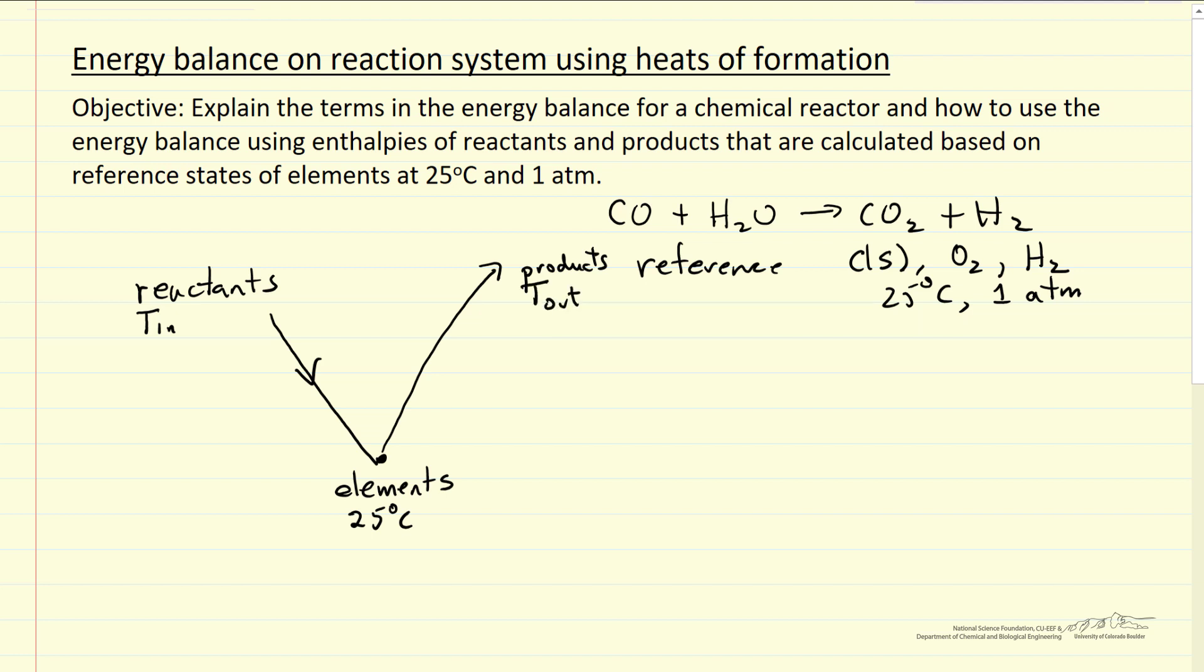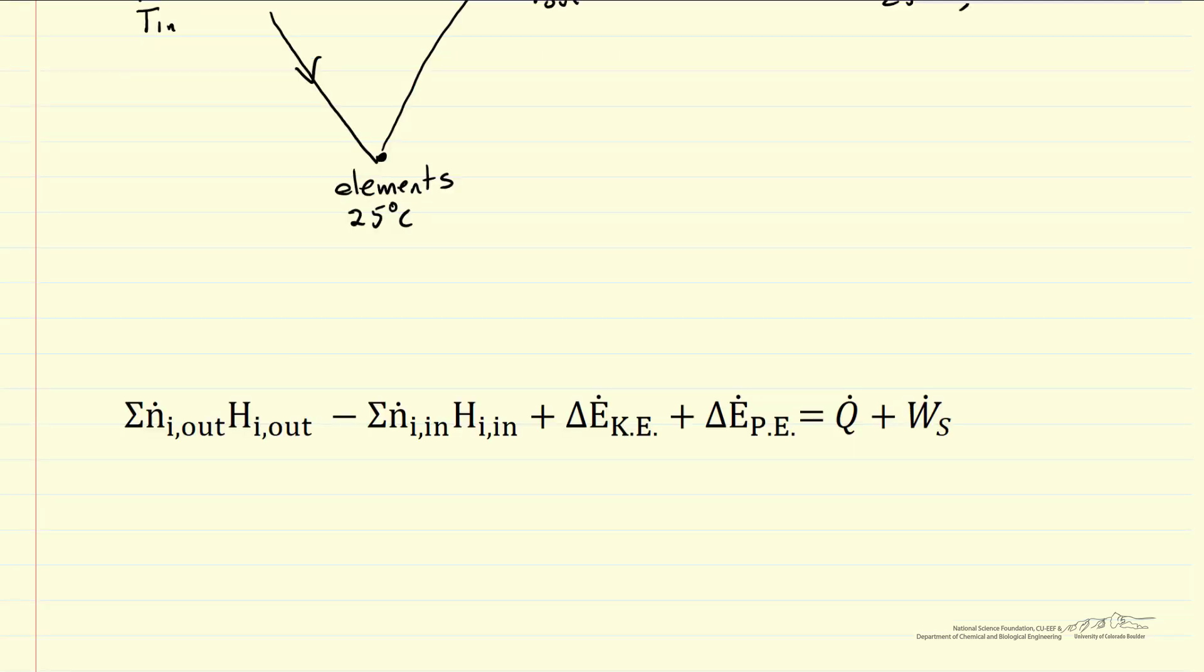We're going to look at those enthalpy changes as a way to calculate, for example, the heat that needs to be added or removed from a reactor. Let's look at the energy balance equation and the meaning of each term. The term for kinetic energy change for most reactors is probably going to be zero, likewise the potential energy change.